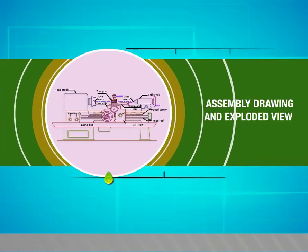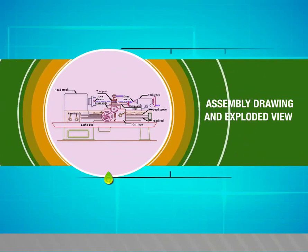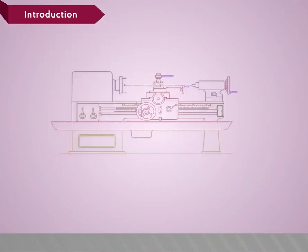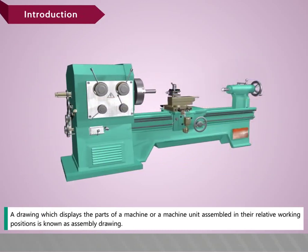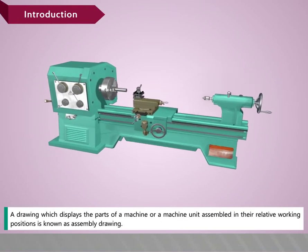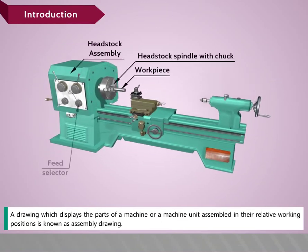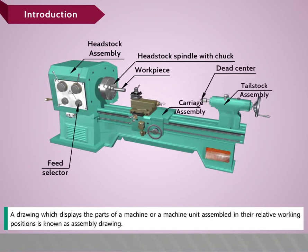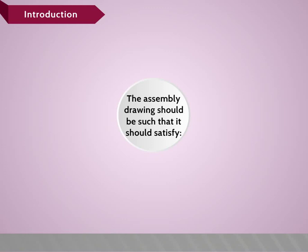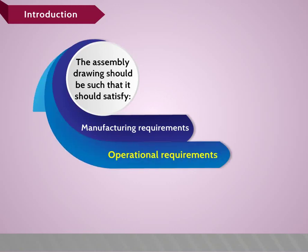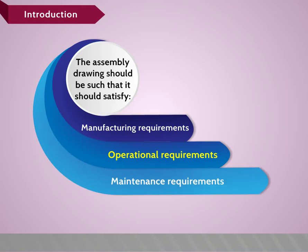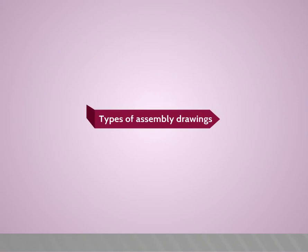In this video we are going to see about assembly drawing and exploded view. A drawing which displays the parts of a machine or machine unit assembled in their relative working positions is known as an assembly drawing. The assembly drawing should satisfy manufacturing requirements, operational requirements, and maintenance requirements. Types of assembly drawings include: designed assembly, layout assembly, installation assembly, working drawing assembly, and general assembly.